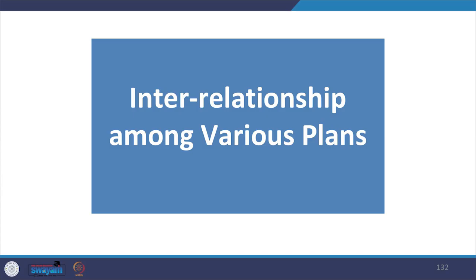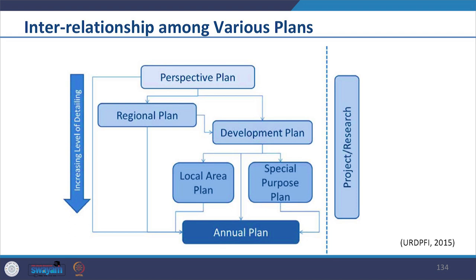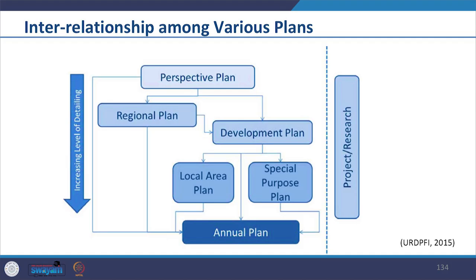By now we have seen all types of plan. Let us now see the relationship among various plans. As seen in the diagram, as per the hierarchy, the perspective plan comes on top and the annual plan supports all types of plan at the lower level with extensive monitoring details. The level of details increases with the lowering of hierarchy. Projects and research could be done at any level of plan. We also see how they integrate together to attain national, regional and local goals in a cumulative manner.